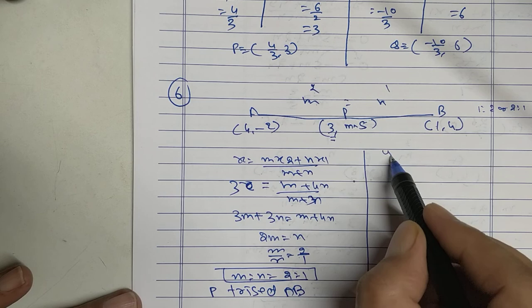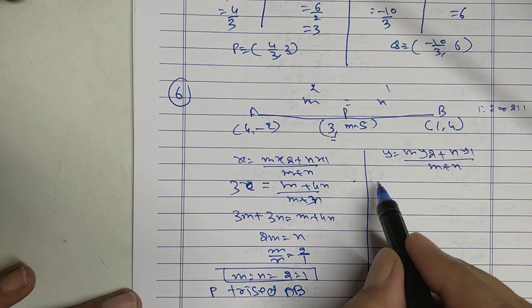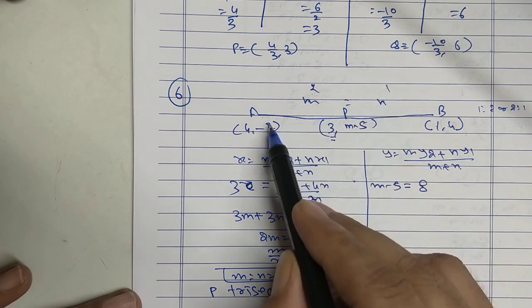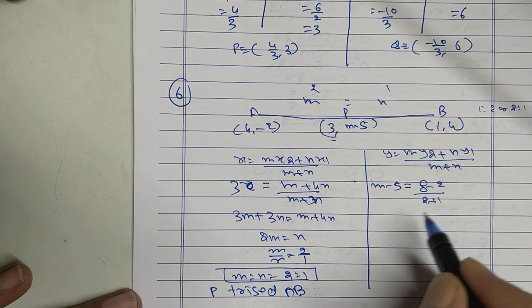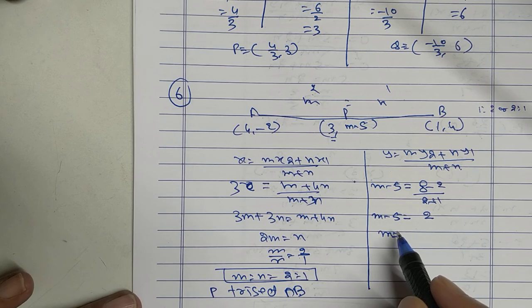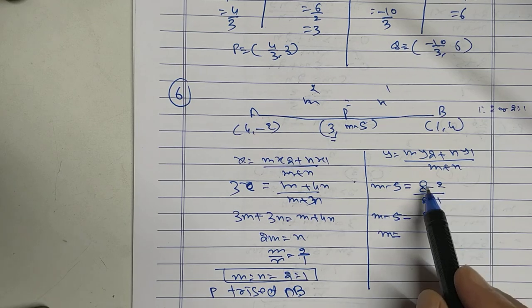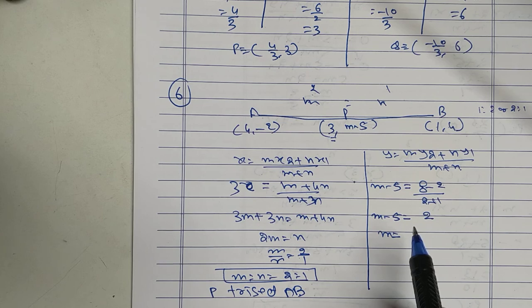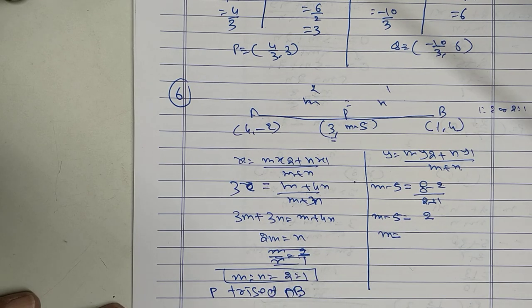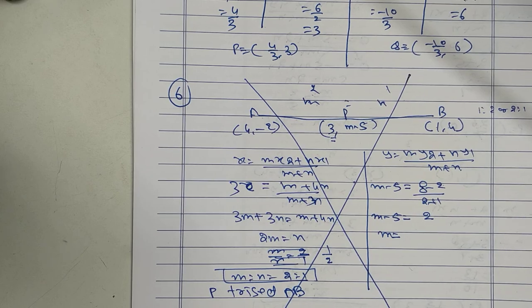I can find y. Y equal to m y2 plus n y1 upon m plus n. Y is given m minus 5. M y2, n y1 minus 2 upon 2 plus 1. So m minus 5 equal to 2. So m equal to... 8 minus 6 upon 3, 2. Oh. I did mistake here. Please. 1 is to 2. I'll do sum number 6 again. Sorry. Let's do this.